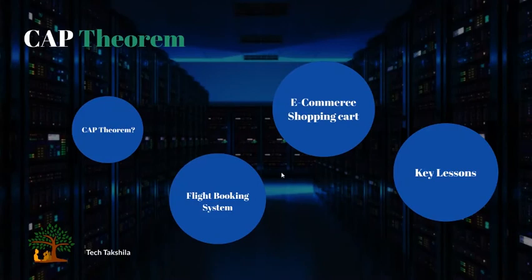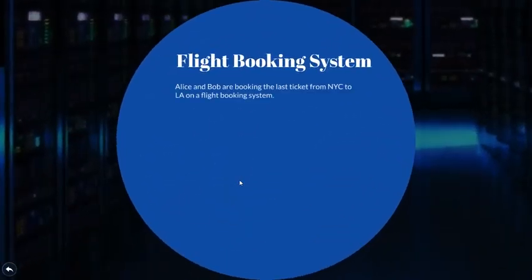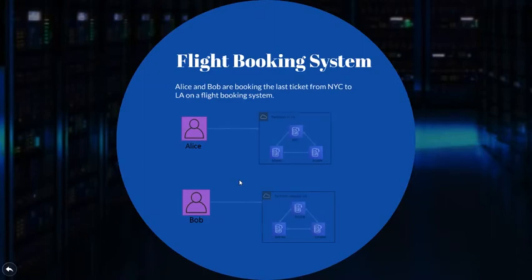Let's work on a flight booking system together. We have Alice and Bob who are trying to book the last ticket on an airplane traveling from NYC to LA. Alice is somewhere in the US and Bob is somewhere in China. Alice interacts with a local data center in NYC, which is a partition inside the US, and Bob interacts with his local data center in BJS, which is a partition outside the US. Right now they are both competing to purchase the last ticket at the same time.